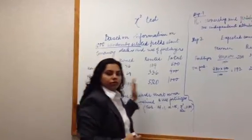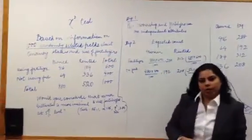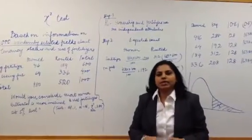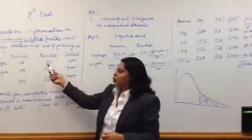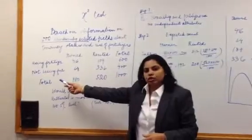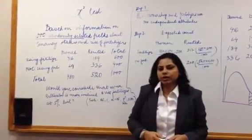The process of chi-square starts with stating the null hypothesis. The null hypothesis in this case is that the ownership of the land as well as the use of fertilizers are two independent attributes.